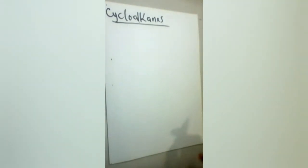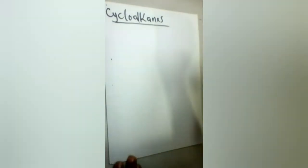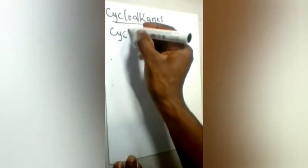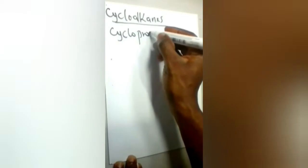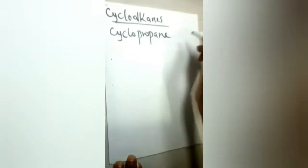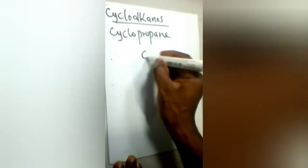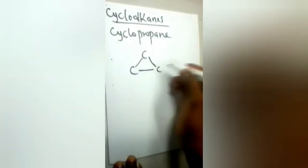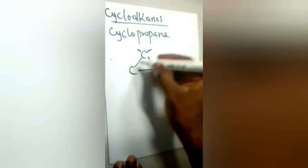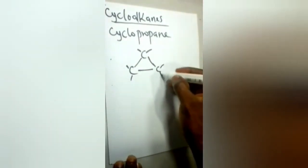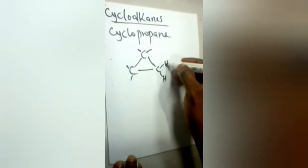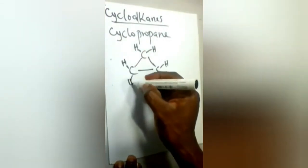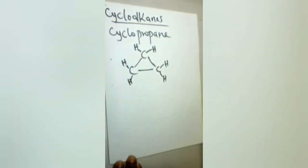And let's take examples of cycloalkanes. Our first example is cyclopropane. Propane has three carbon atoms. This should be arranged in form of a cycle. Propane has six hydrogen atoms attached to these three carbon atoms, cyclopropane.